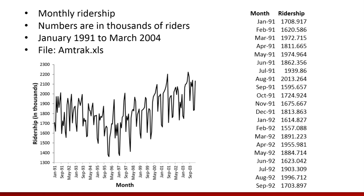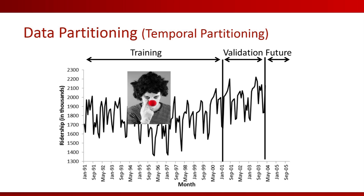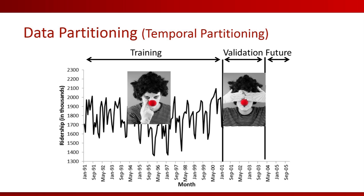So where does data partitioning come in? Suppose we want to forecast future monthly figures of the Amtrak ridership series. To do that, we partition the series into three periods. The period we would like to forecast is the future — we do not have data for that period. We take the data we do have and partition it into training and validation periods. We then shift ourselves back in time to the end of the training period and pretend we do not see the validation data. We build our forecasting model using the training period while blind to the validation data, then generate forecasts for the validation period, and only then reveal the validation data to see how well we forecasted.